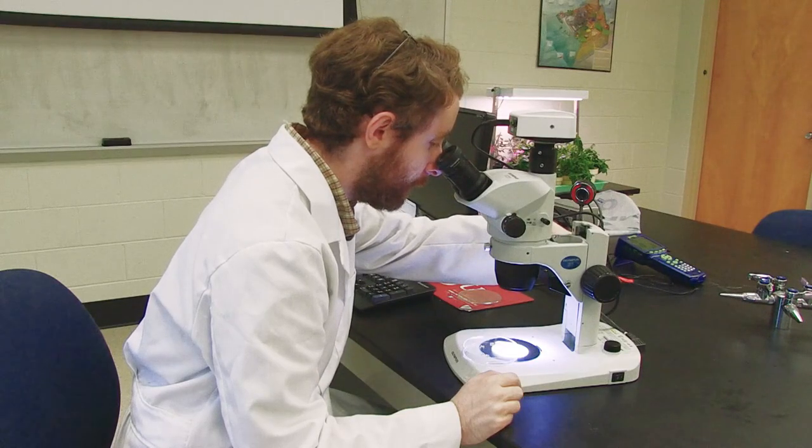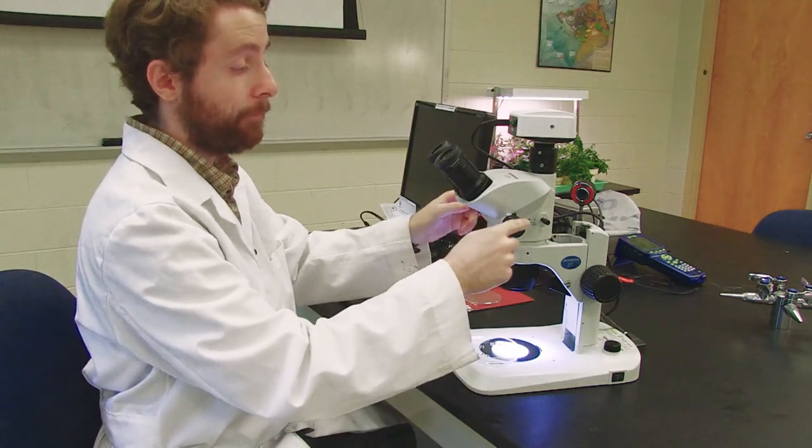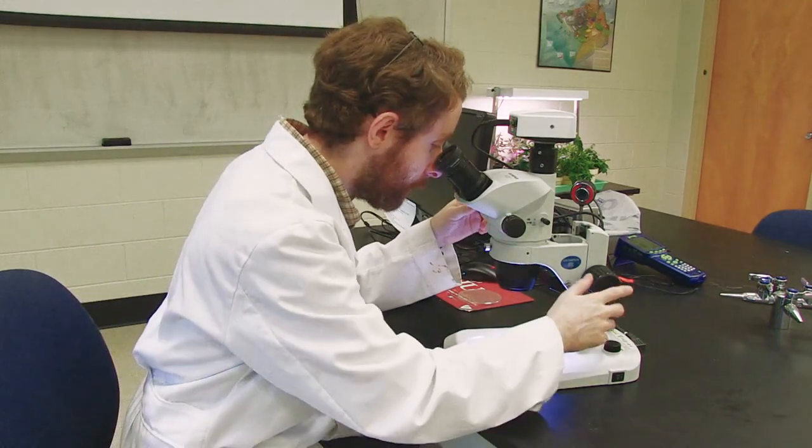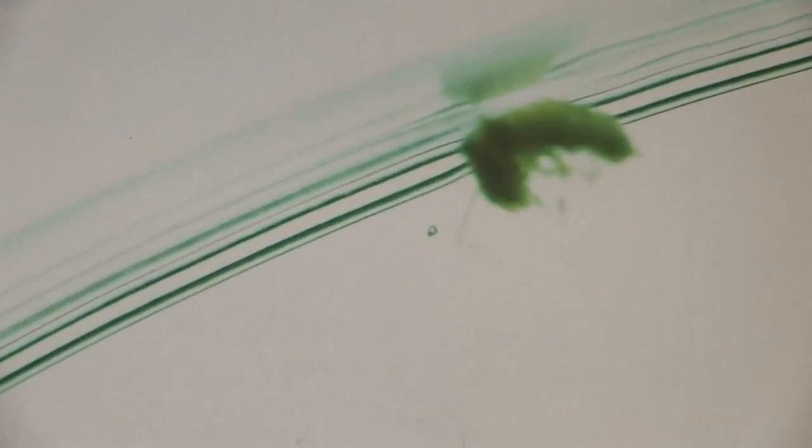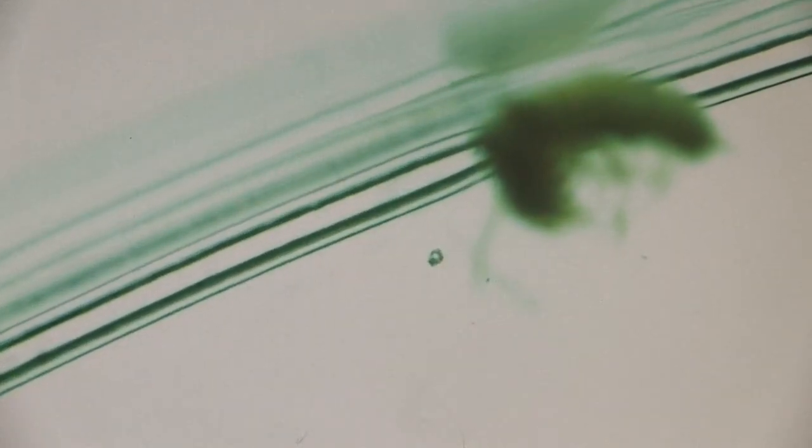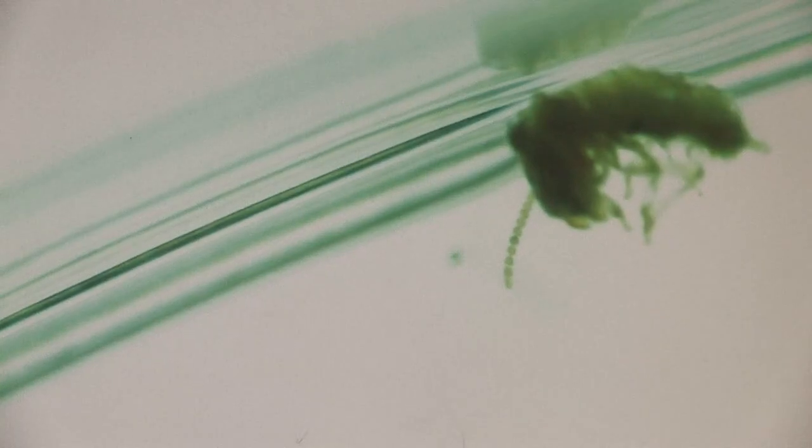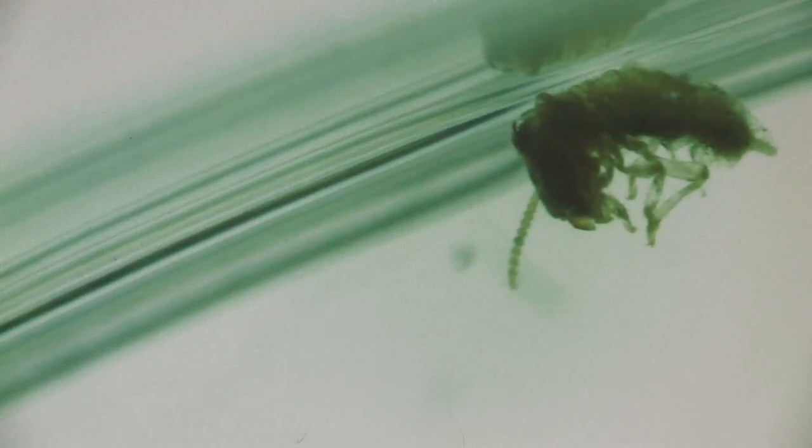My termite is now in focus. So I can now use my zoom knob and zoom in. Again you may have to adjust the focus knob a little bit as you do this. As you can see, I have a termite here. This is a dead termite, it's in water right now. But you can clearly see the appendages and the antennae of our termite worker.